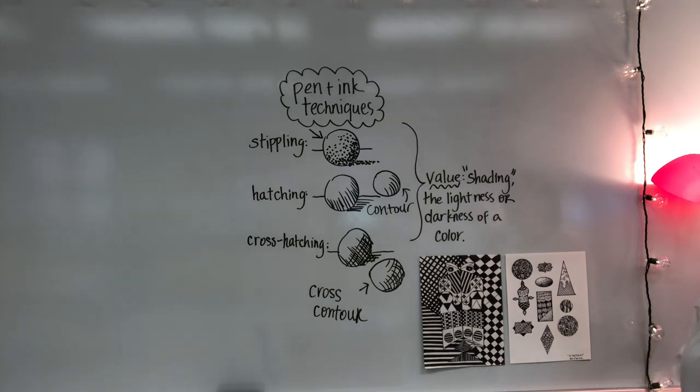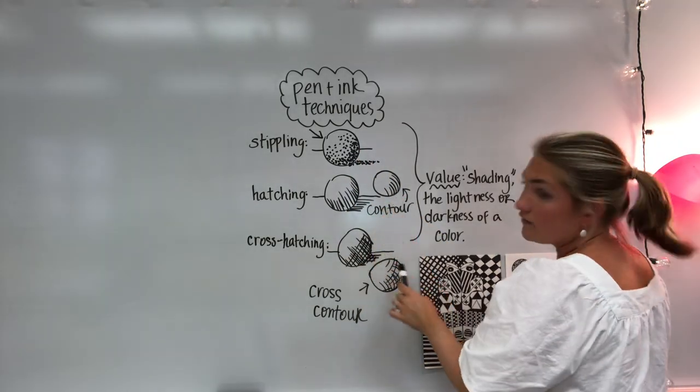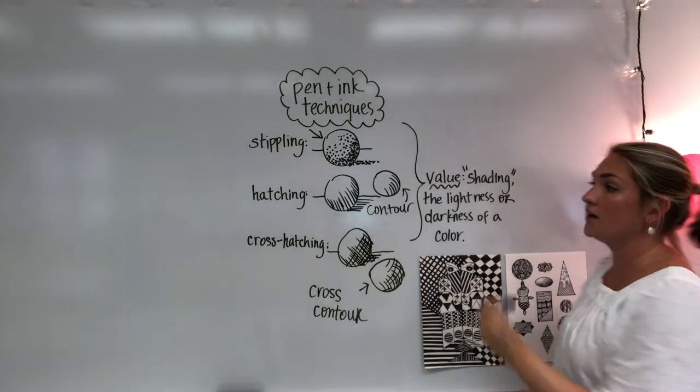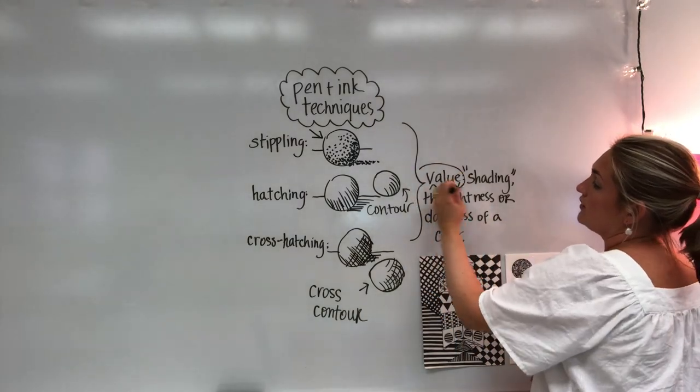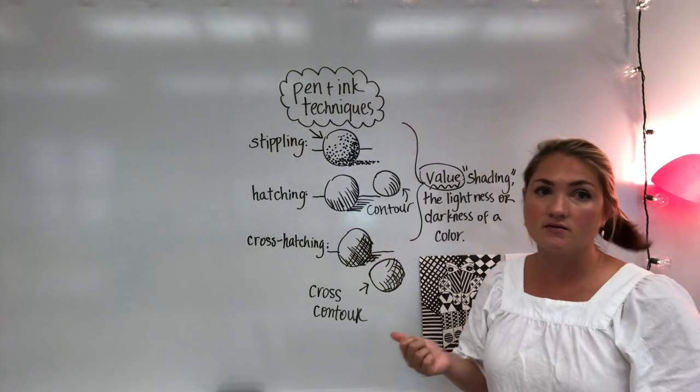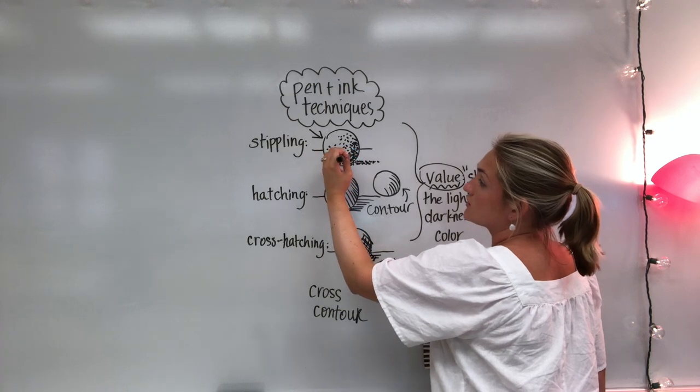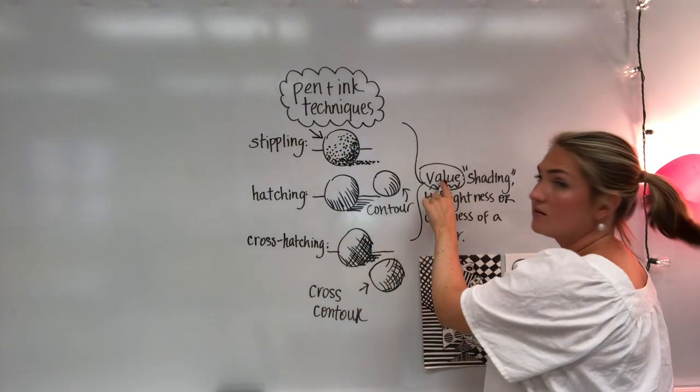Alright so what I've done is I've basically shown you three, one, two, three, technically four, five ways that you can create value in your artwork. Value has to do with shading or the lightness or darkness of a color. So the deeper your stippling marks, the darker the value.